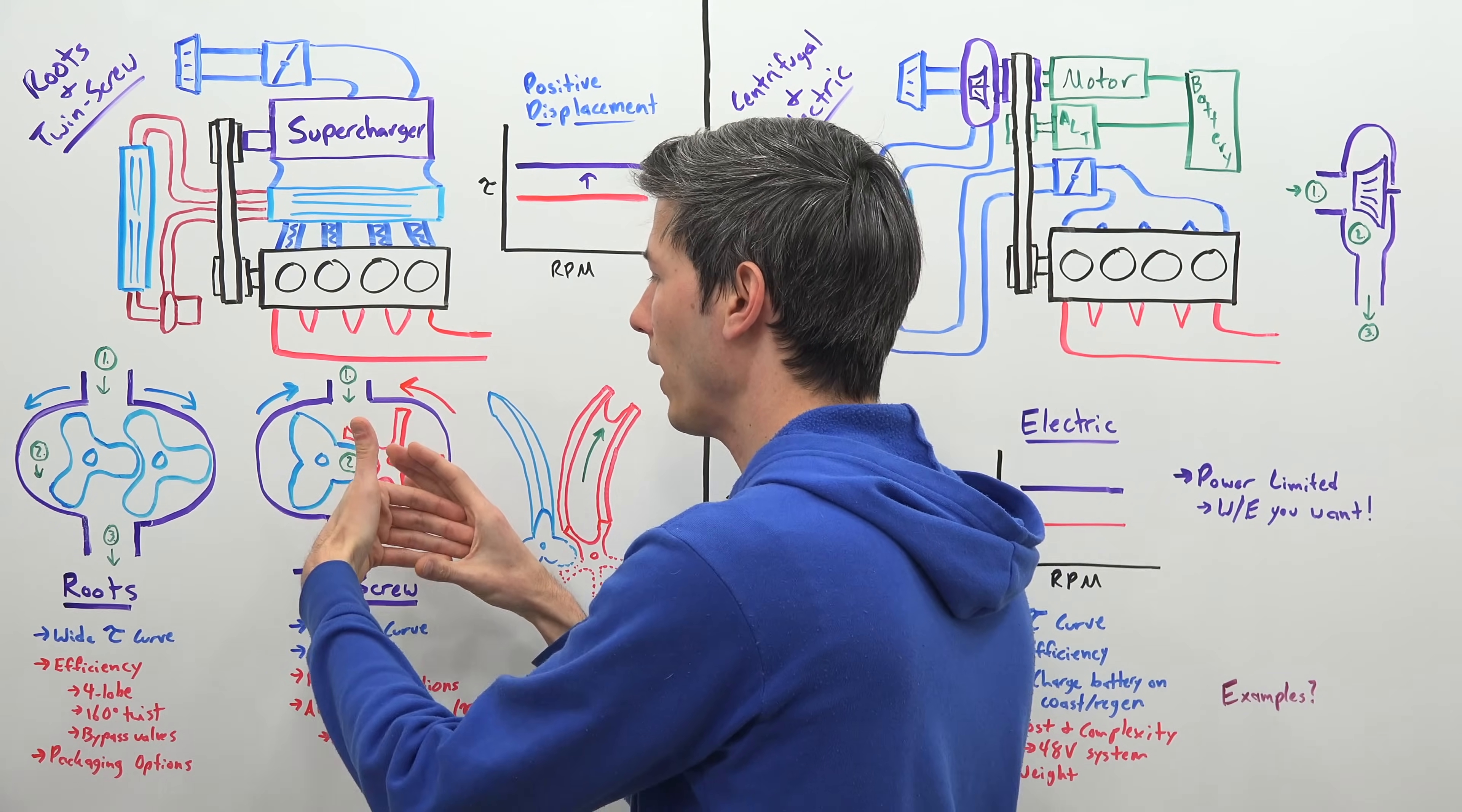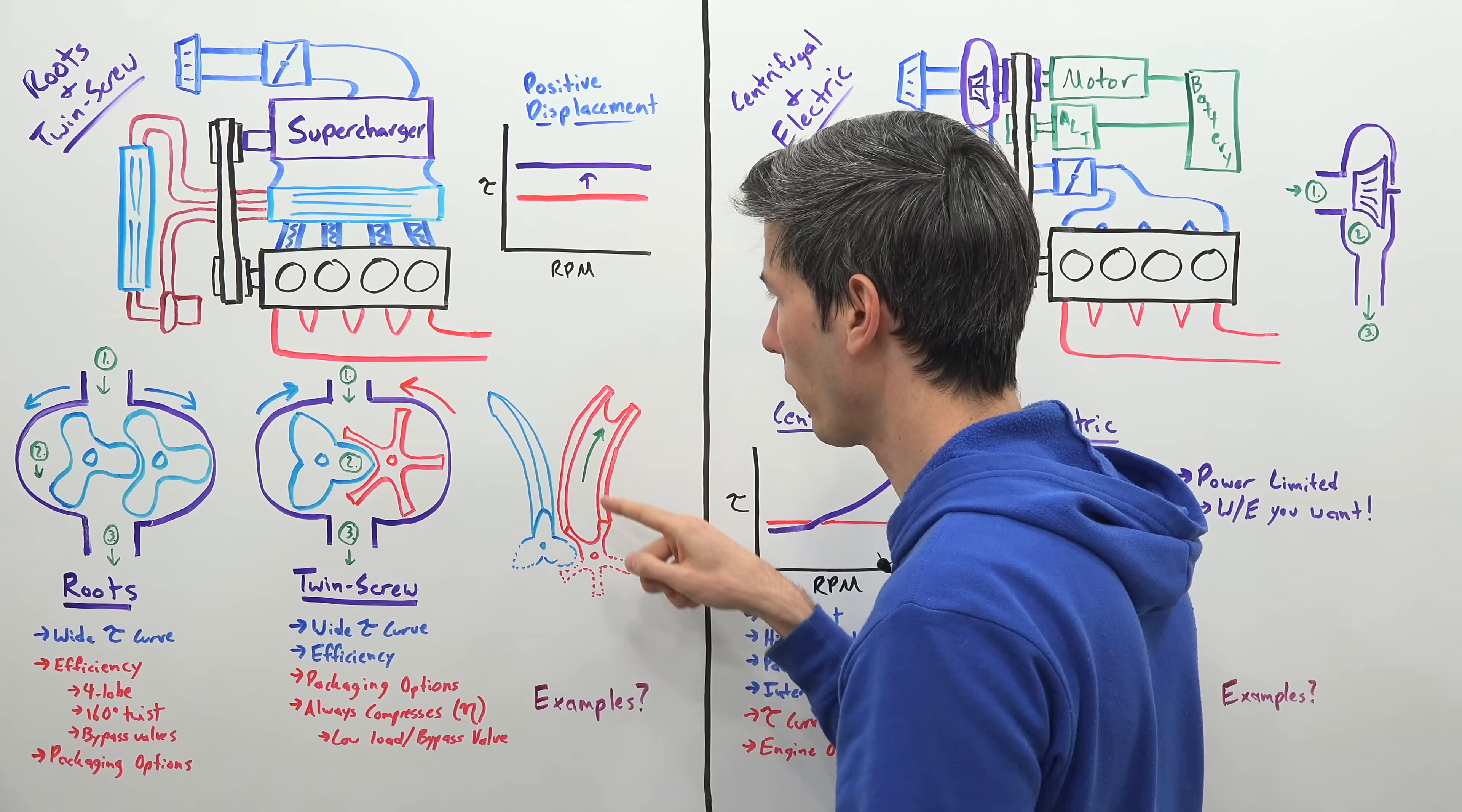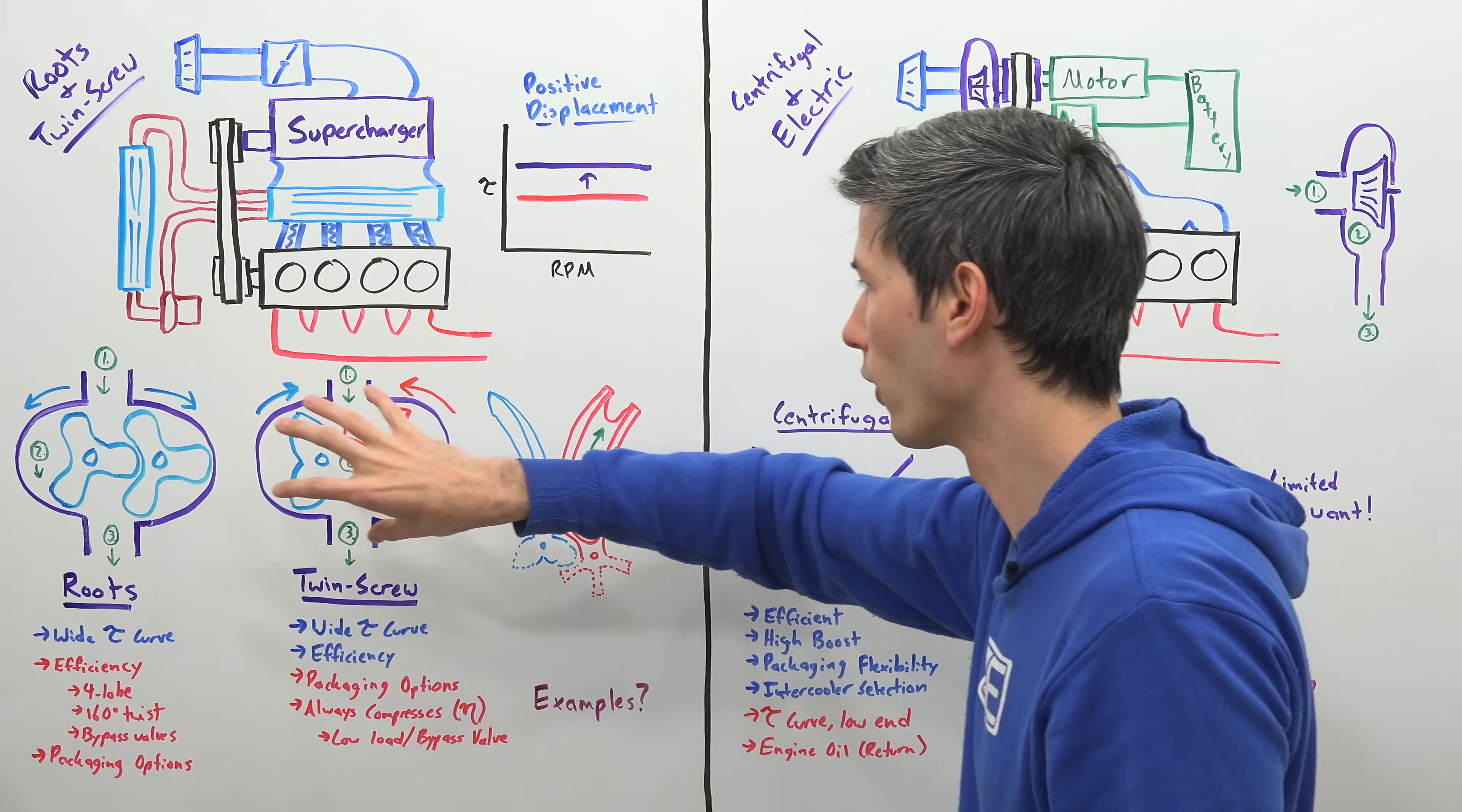and it compresses that air along that rotor to the back of it. So the air comes in, it gets compressed down through that rotor and then forced out the back, and then that compressed air exits below. So this is not compressing air inside of it versus this is compressing air within the supercharger itself.